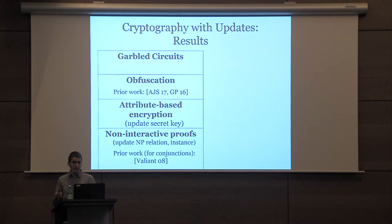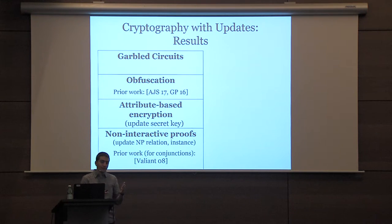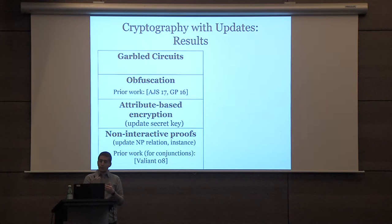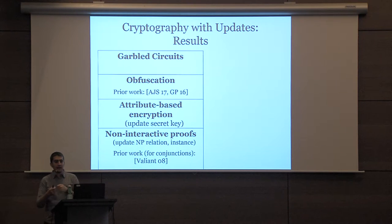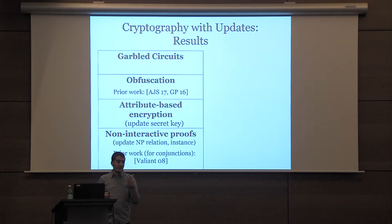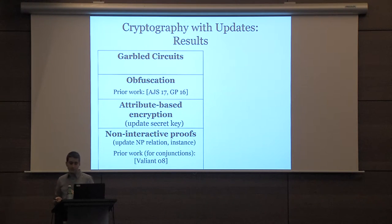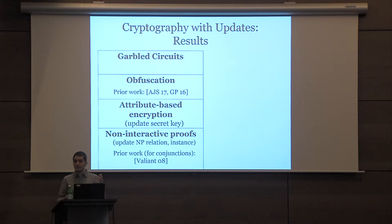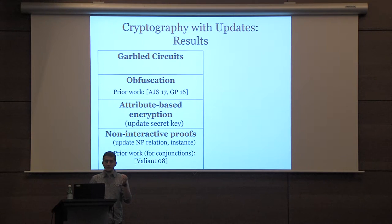This is a very natural question, and it raises other natural questions. We can think about the same question not only in garbled circuits but in obfuscation: if I obfuscate a circuit C and then want to obfuscate a circuit with one gate changed, do I have to obfuscate all over again? Or in attribute-based encryption: if I've already generated a secret key for some policy, do I have to generate a whole new secret key if I want to change just one gate in the policy? Or for non-interactive proofs, if I have already proved some NP statement, do I have to redo it if I change a very small piece?